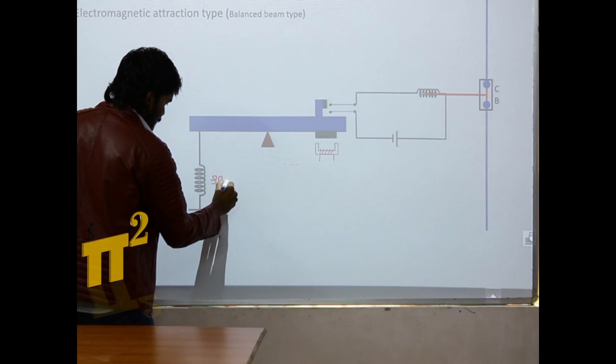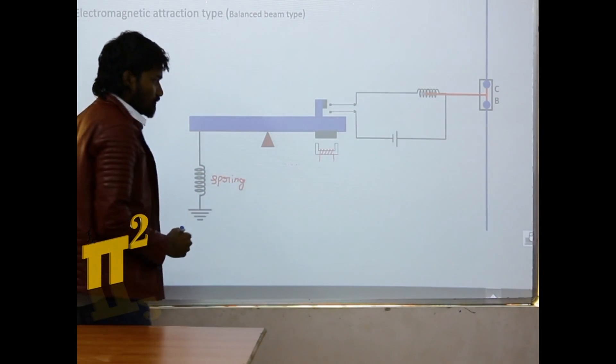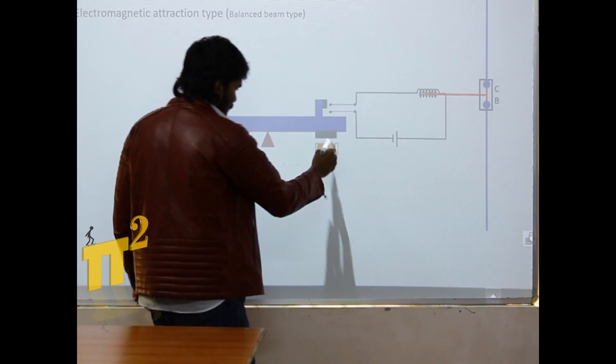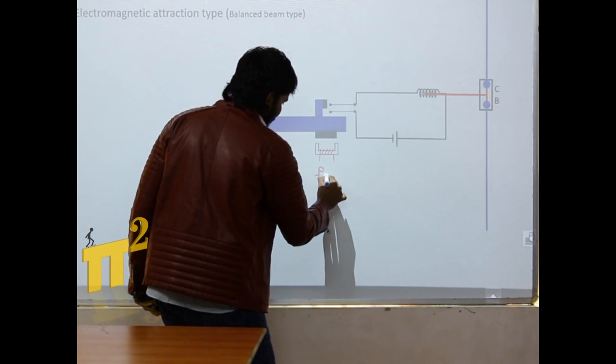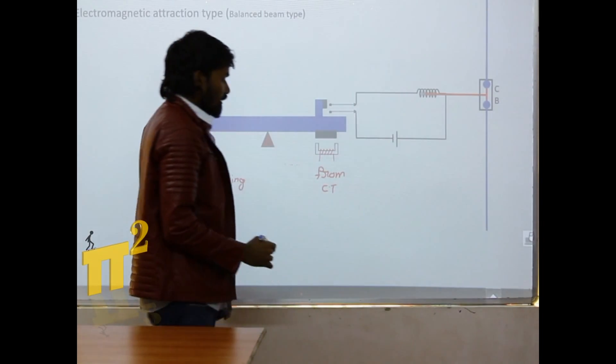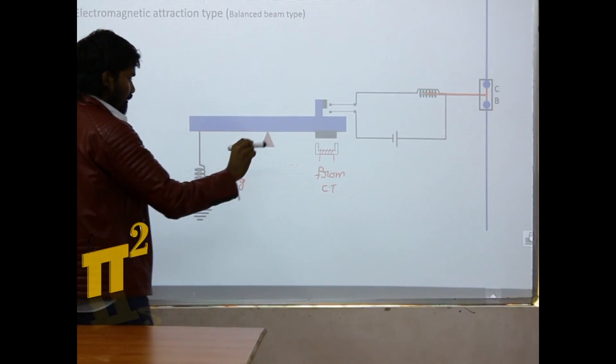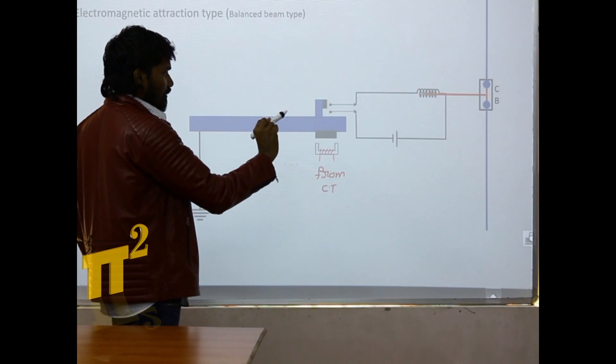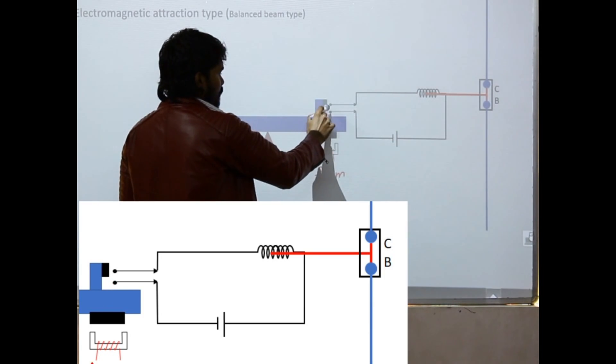Now we have a spring here, and there is an electromagnet which is fed from the CT. If spring force is more, this will tilt back. Hence the contacts will be closed.